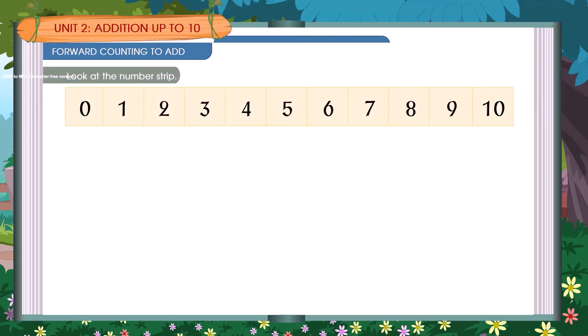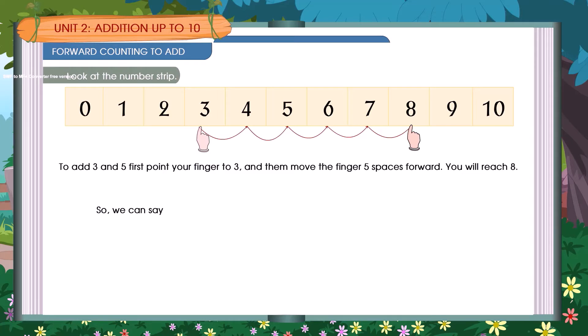Forward counting to add. Look at this number strip. To add 3 and 5, first point your finger to 3 and then move the finger 5 spaces forward. You will reach 8. So, we can say 3 plus 5 is equal to 8.